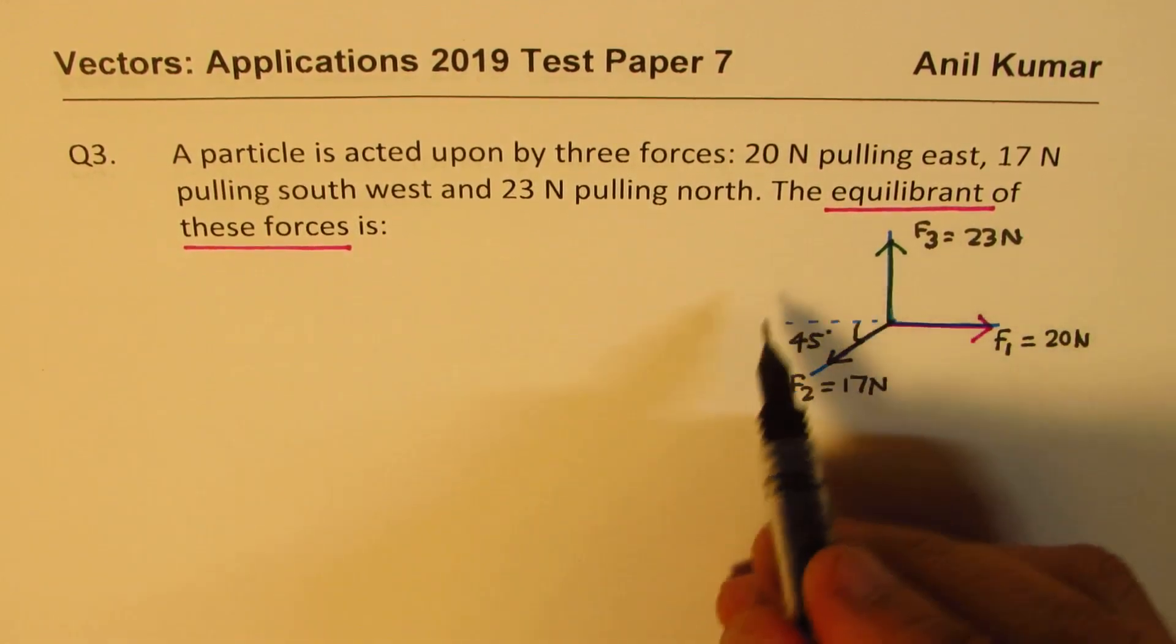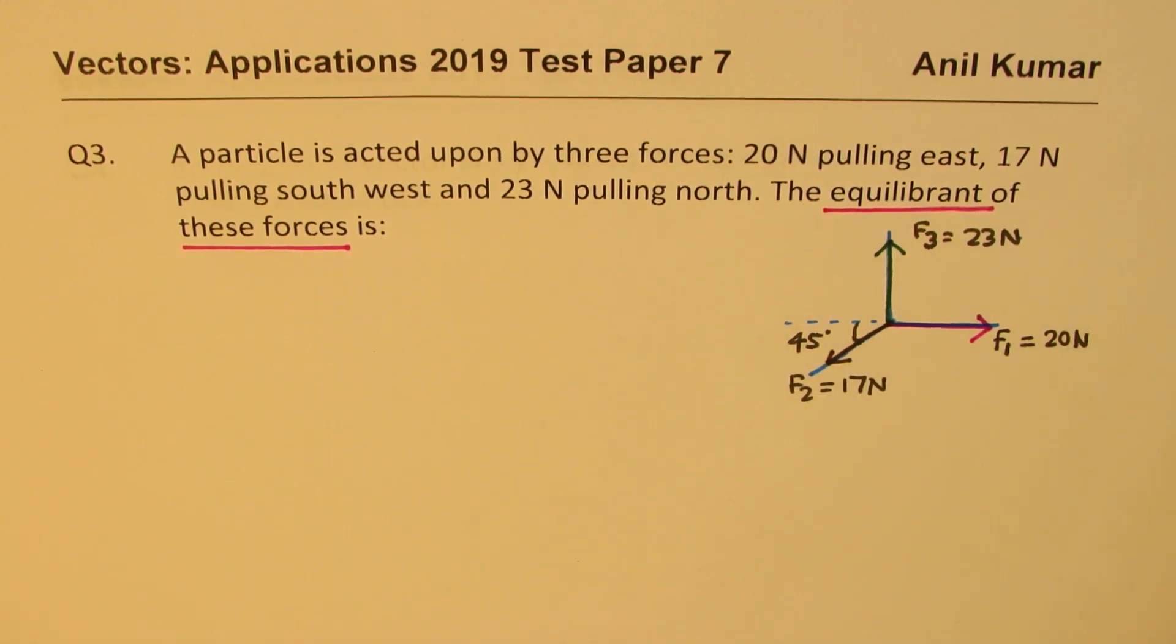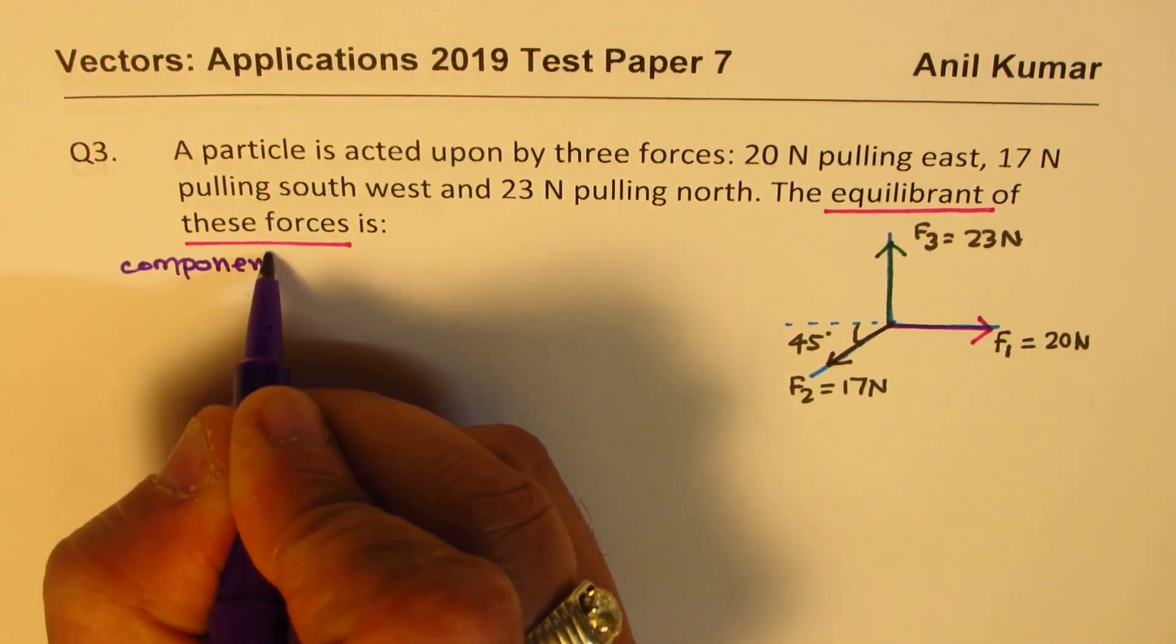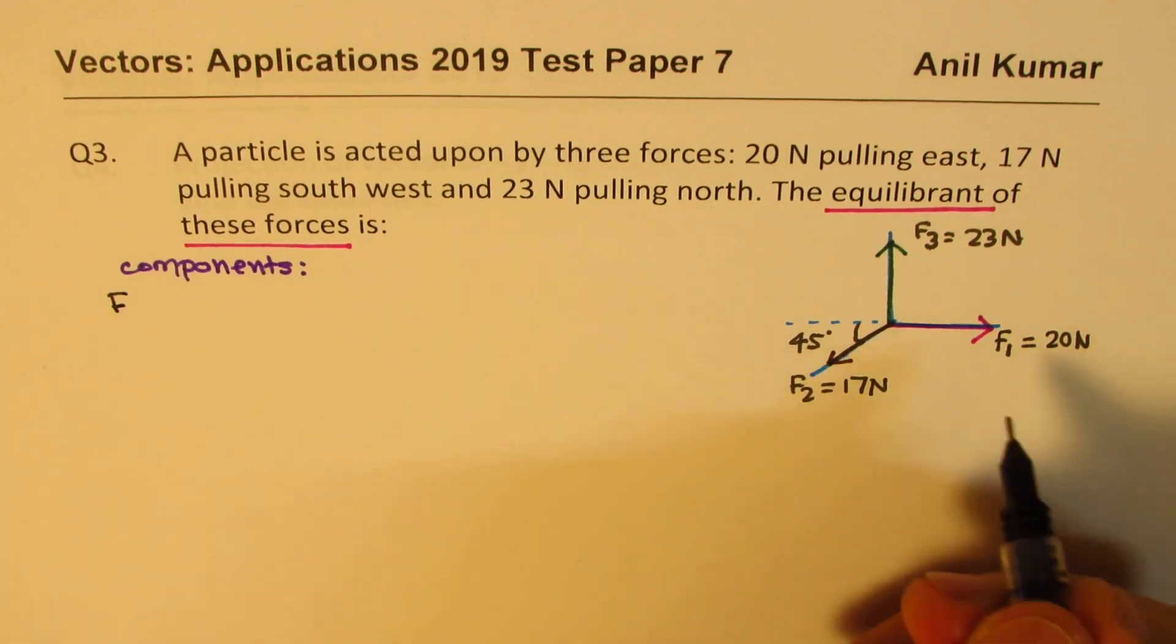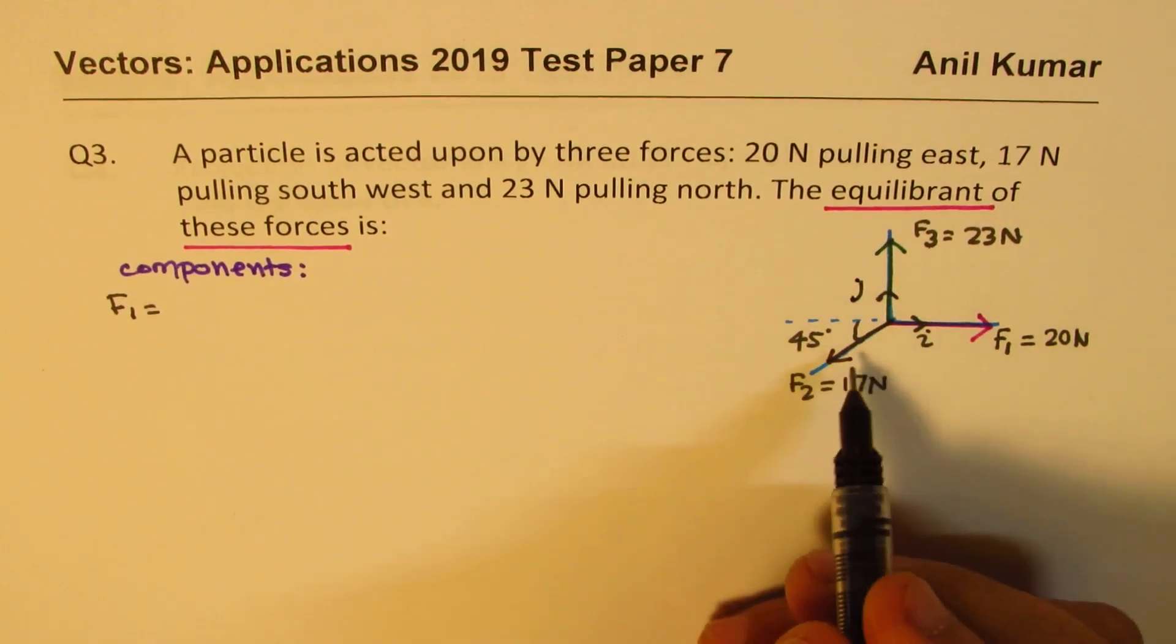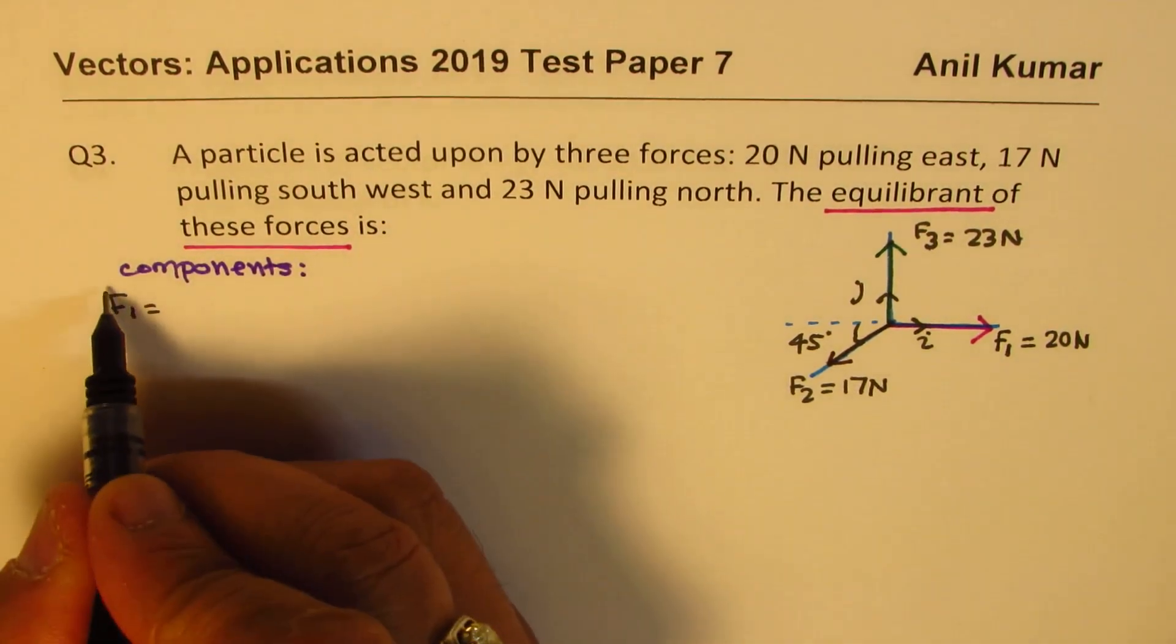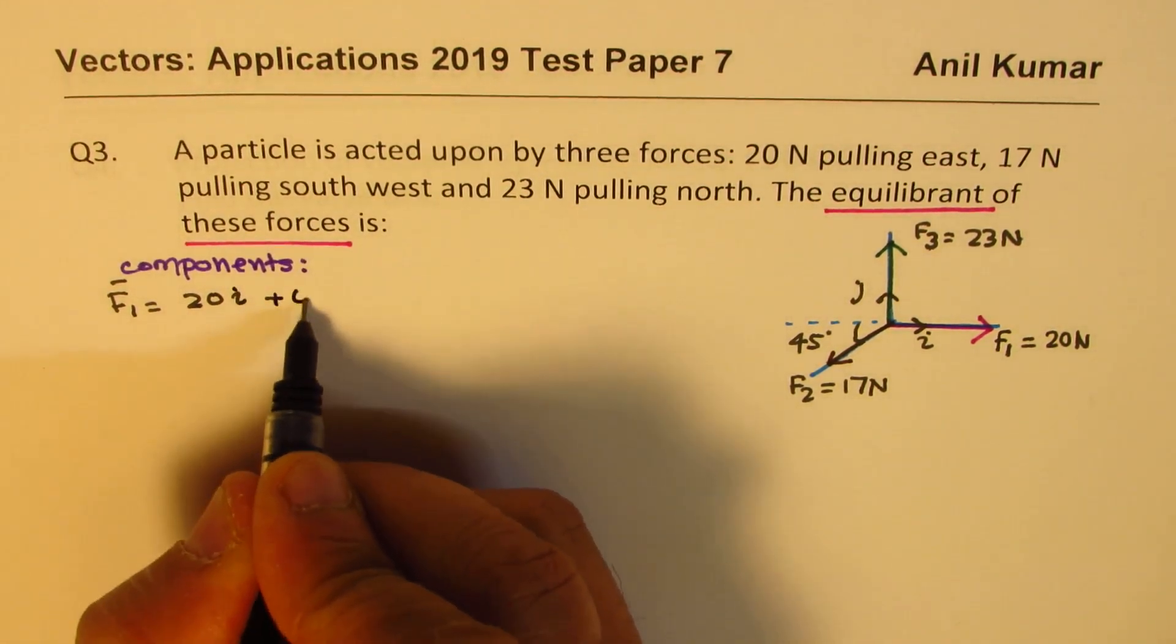Now let's write down all these forces in terms of their x and y components. So our step will be to write them in components. So we can say that F1 is, let's say this is along direction i and this is j for us. Force 1 is given to us as 20i plus 0j.